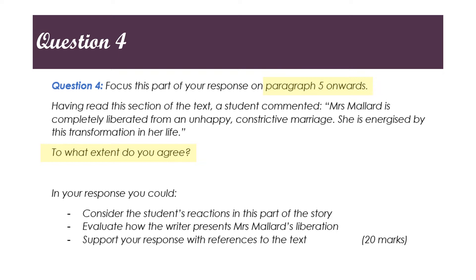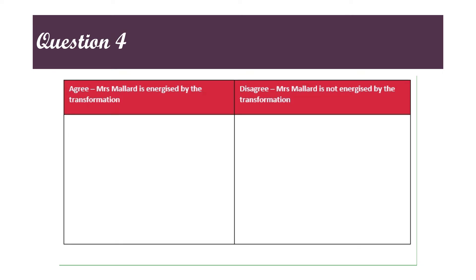You've got 20 marks, so 20 minutes, and you should be writing about four paragraphs. Before I write my answer I'm just going to do a quick plan. I've got an agree/disagree table here. In the agree column I've said that Mrs Mallard is energized by the transformation; in the disagree column I say that she's not energized. You can do this in your exam — just sketch two columns quickly and jot your ideas down. It means your answer will be clear and coherent, and you can construct an effective argument.